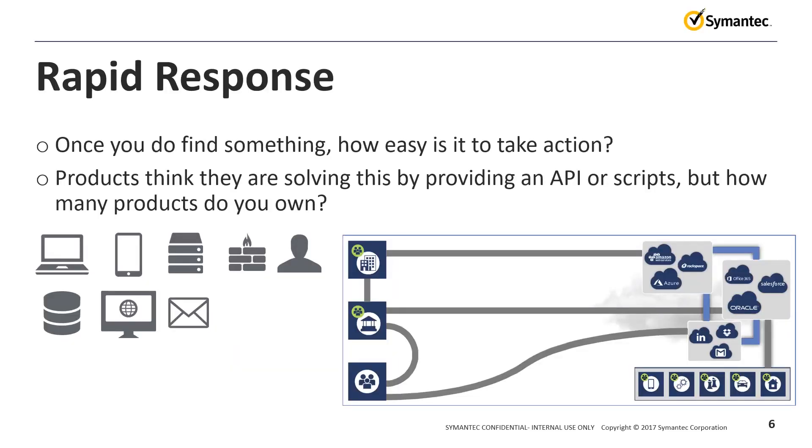The last part is really around actions: I have found something amidst all this noise — what do I do now? And Symantec is just as responsible for this, probably worse than anyone. As a vendor, what we do is we make an API and assume that's good enough for orchestration. The problem is that every single product has its own API and its own language for doing these orchestrated actions. It's not like you only have one product. How many products do you have, and where are your users — in your network, a coffee shop, at home? Are they managed devices? Cloud or on-prem? You can't sit there and deal with 500 different APIs just to do some basic security actions. It makes it slow to respond, at which point, why bother?